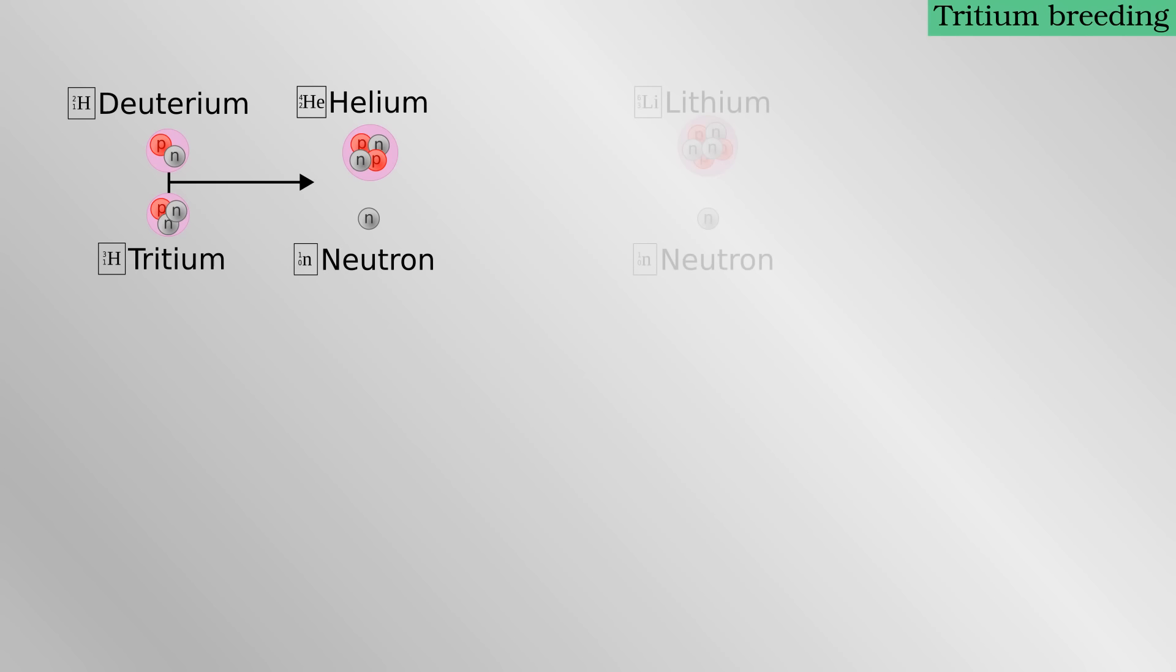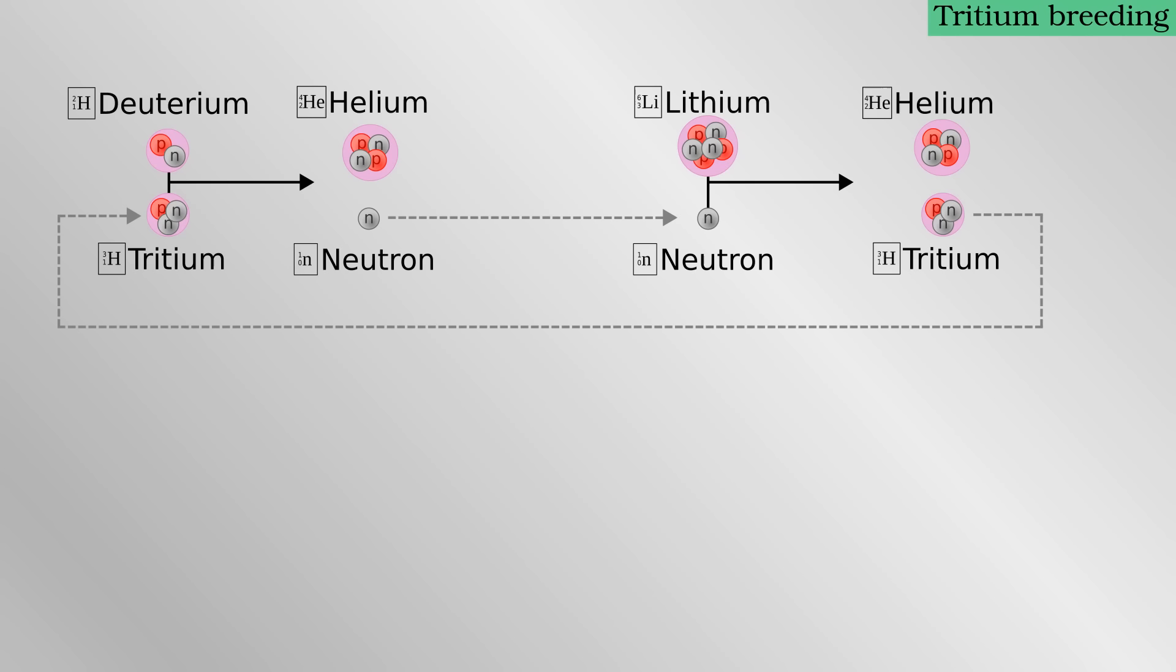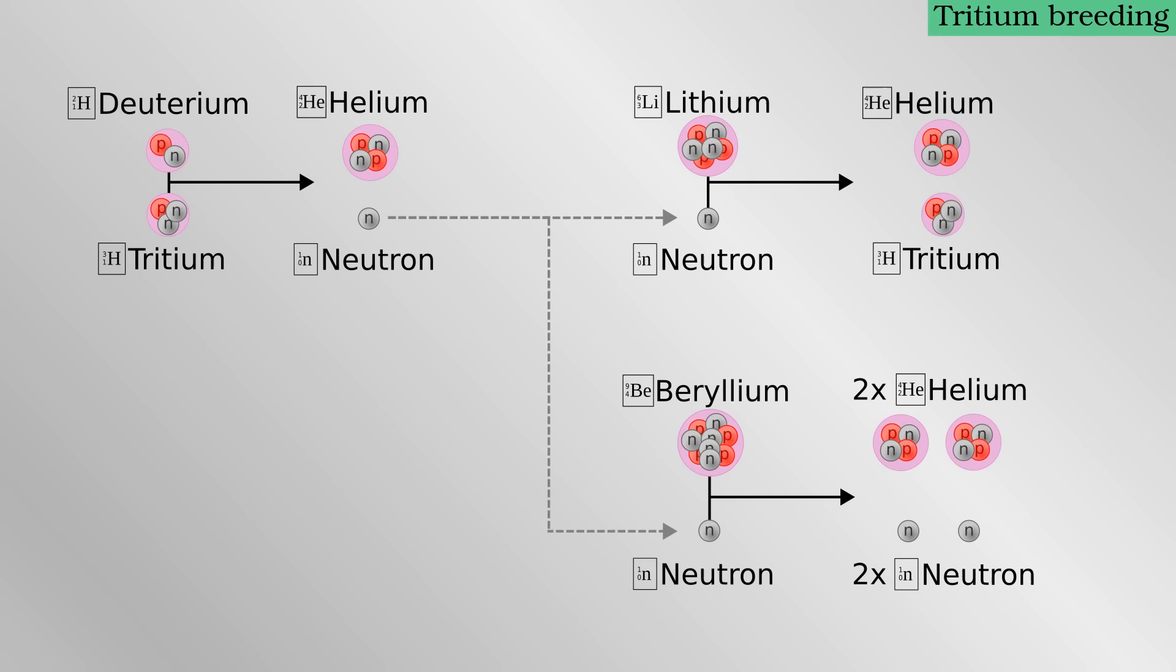Tritium does not occur naturally and must be generated or bred within a future power plant. Fortunately, lithium-6 can be activated by neutrons to produce tritium and a little extra energy. One tritium nucleus undergoes a fusion reaction to produce one neutron, which in turn produces one tritium again. This cycle works assuming perfect efficiency, but as we have seen some neutrons will be absorbed elsewhere, some tritium will be lost or decay away radioactively. Fortunately, beryllium can release two neutrons when struck by a single one. Therefore, for some of the original neutrons the tritium production is doubled and the losses can be made good.